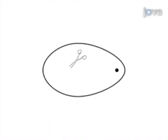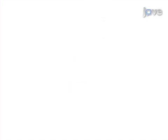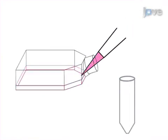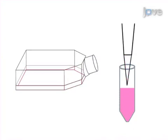This is accomplished by first making a window in the shell of an egg on incubation day three. In the second step, on incubation day nine, the tumor material is prepared.